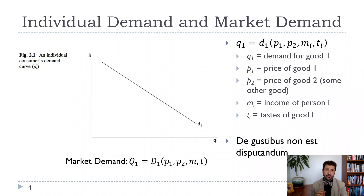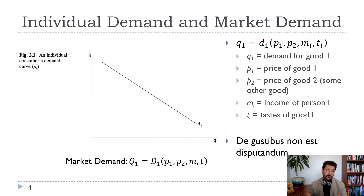With vertical differentiation, we're talking about quality, and the idea is that people can agree on which is the higher quality product. We might all agree that a BMW is a higher quality product than a Hyundai. But with tastes, people can disagree — some people might prefer a Toyota, some a Honda, some people might prefer Coke, some might prefer Pepsi.